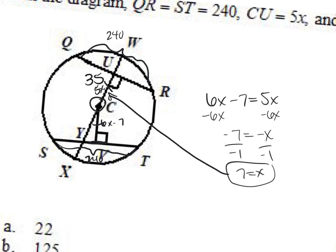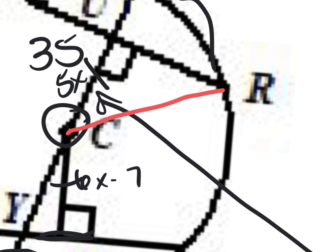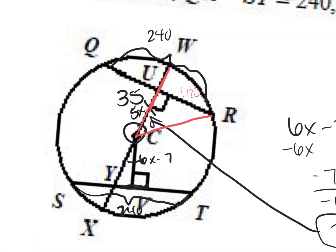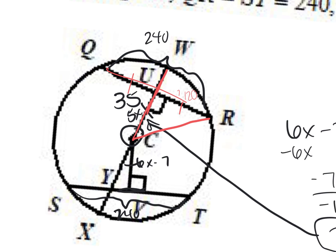Now there are only two radii given — CW and CX — but I'm not going to use either of those. The radius I should draw is C to R. So we have one side of our right triangle equal to 35. The other side is 120. Why? You do 240 divided by 2 — this radius is cutting the chord in half, so it's congruent on both sides. 240 divided by 2 is 120.